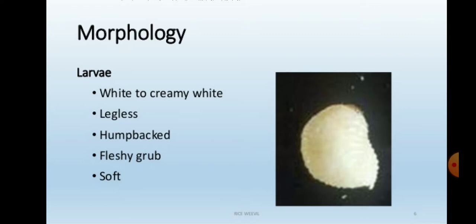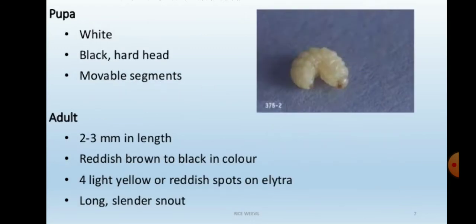The pupa is a very important stage because it is the resting condition. After pupation, the adult emerges from the pupal stage. The pupa is white in color with a black or hard head. The body is divided into movable segments.